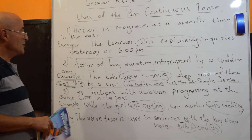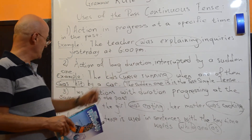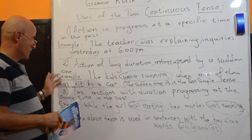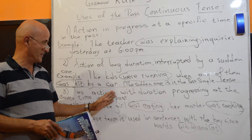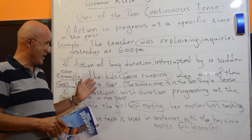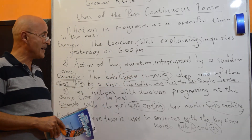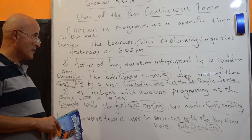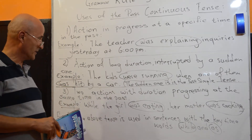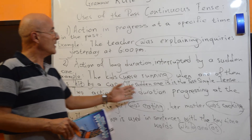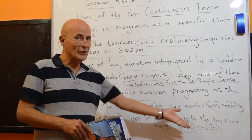The second use of the past continuous tense is an action of long duration interrupted by a sudden one. For example, 'The kids were running when one of them was hit by a car.' The action of long duration, 'were running,' is in the past continuous tense, while the shorter action that interrupted it, 'was hit,' is in the past simple tense.